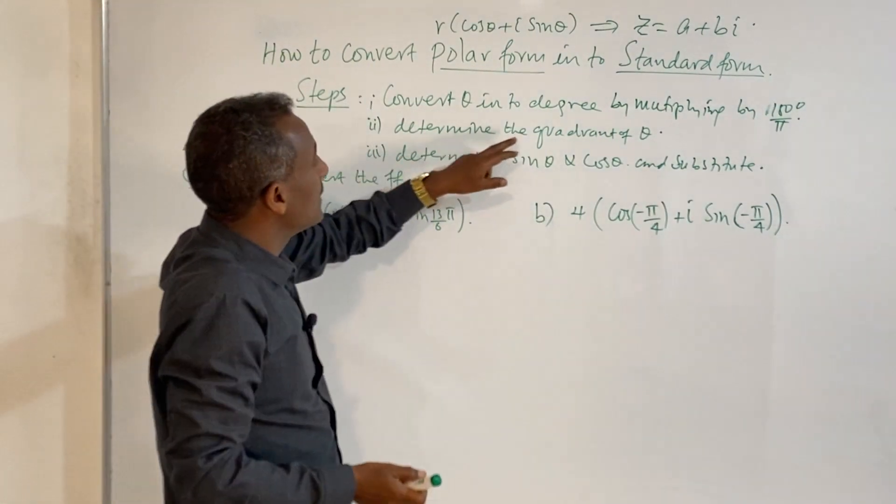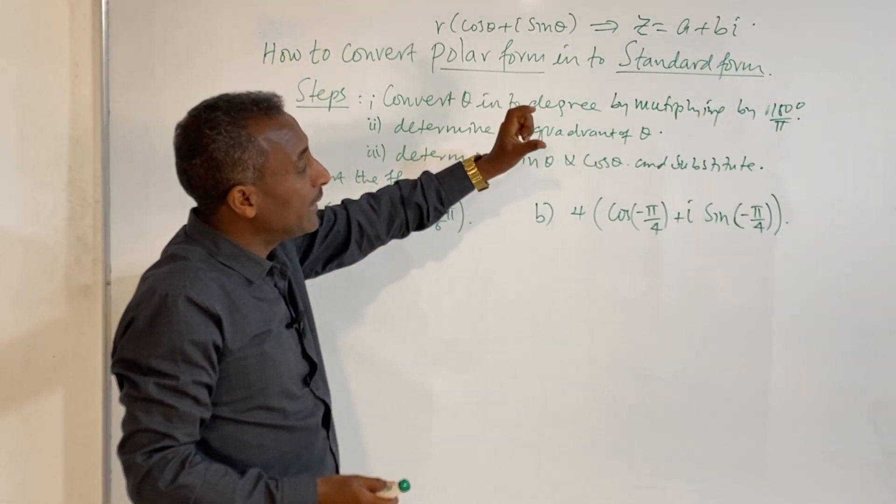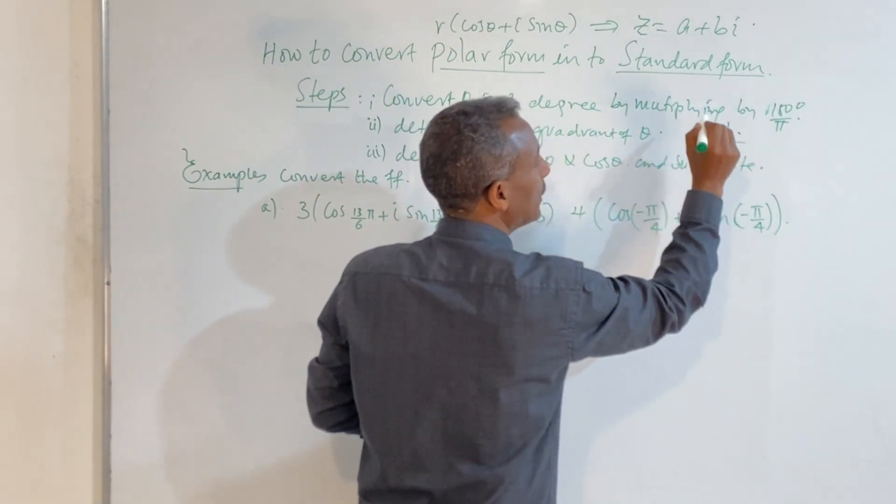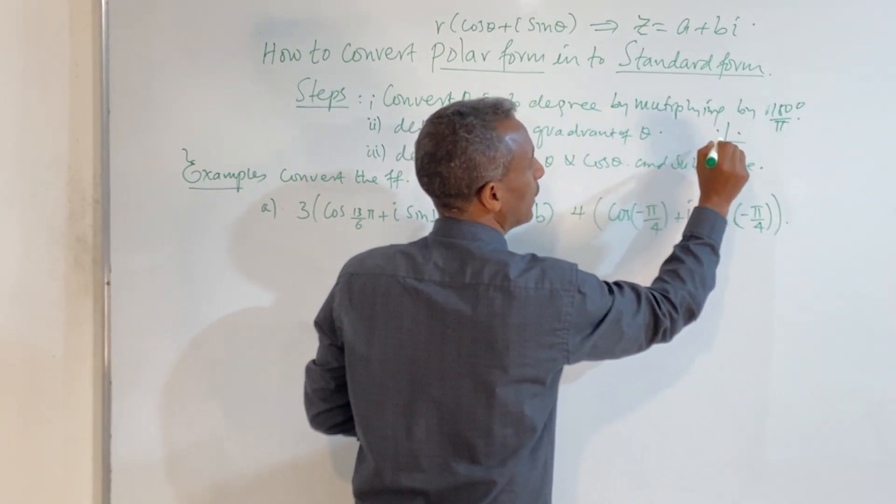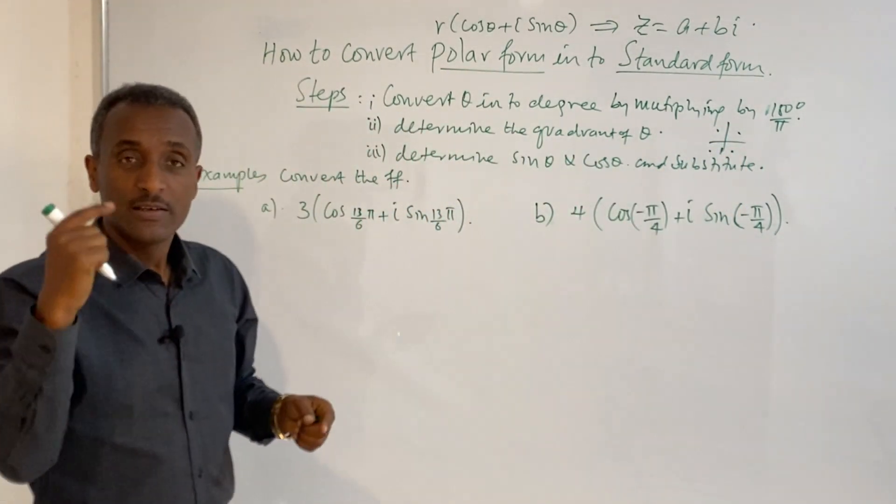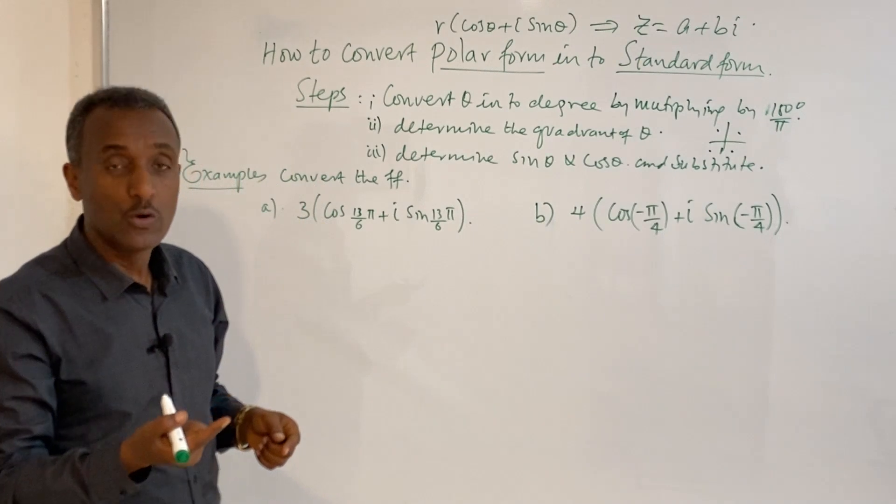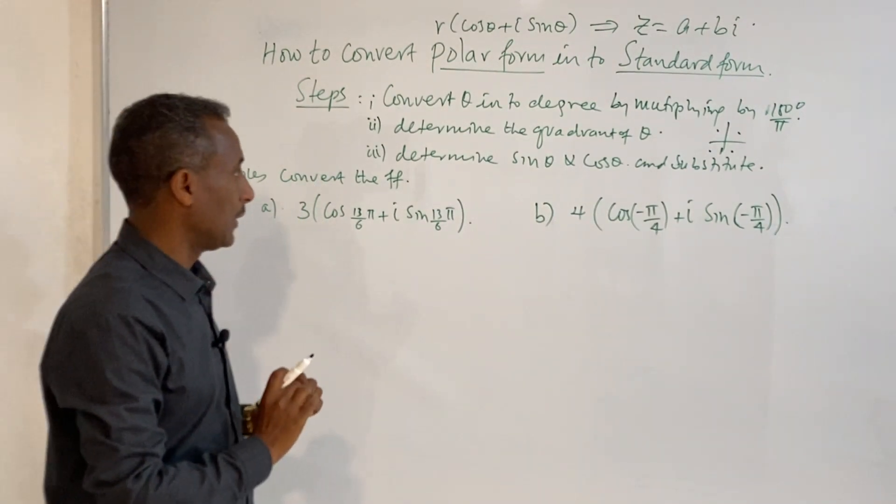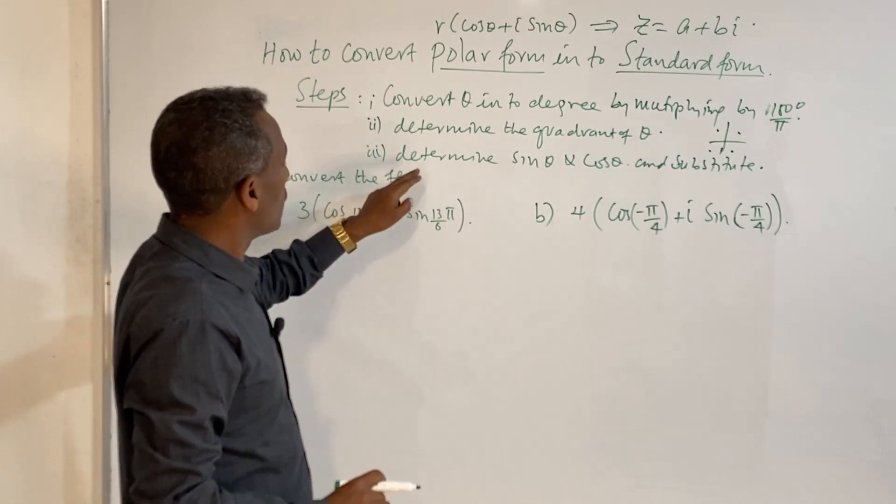Second, determine the quadrant. First quadrant, second quadrant, third quadrant, fourth quadrant. In the third quadrant, both sine and cosine are negative. Determine which quadrant you're in to know the signs.